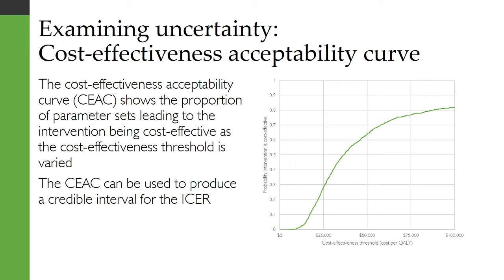A 95% credible interval for the ICER would be found by looking at 2.5% on the y-axis and tracing along to find the cost-effectiveness threshold. This would give the lower end of the credible interval, and in this case there would be no upper end.